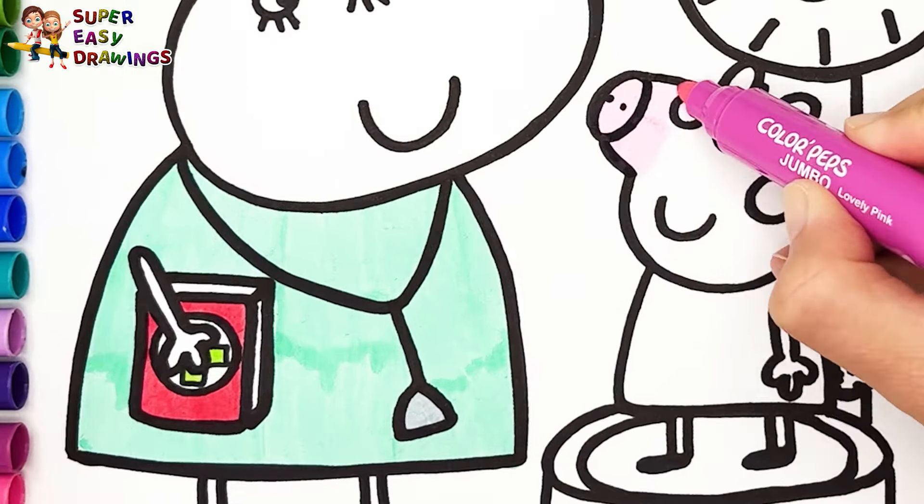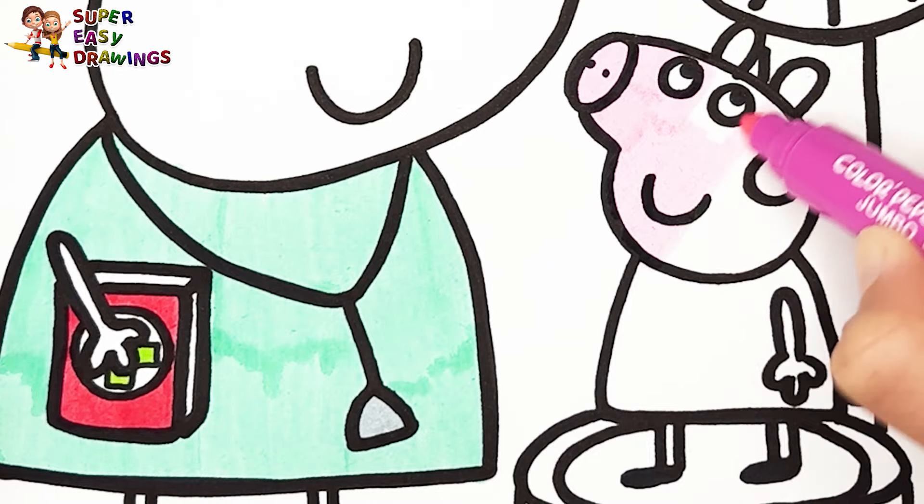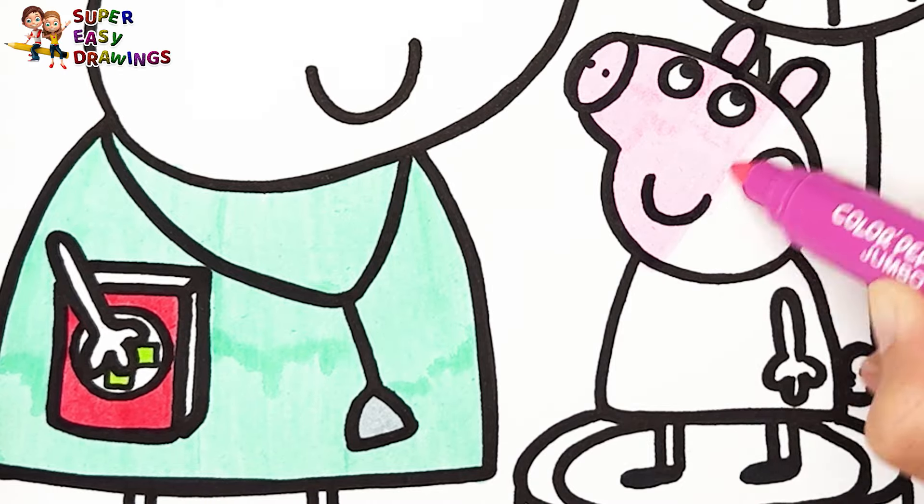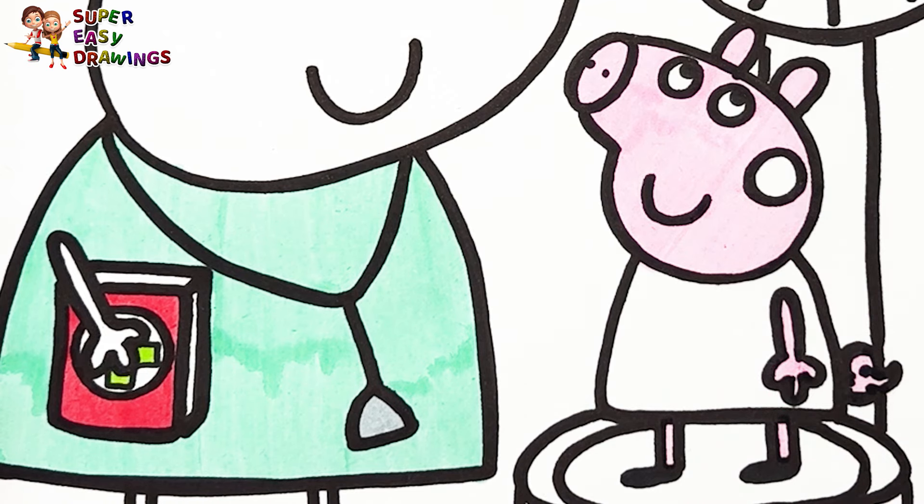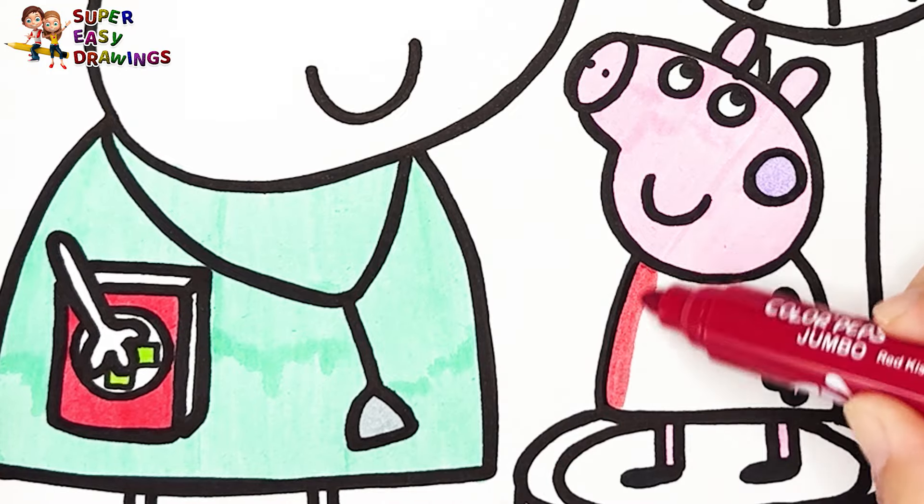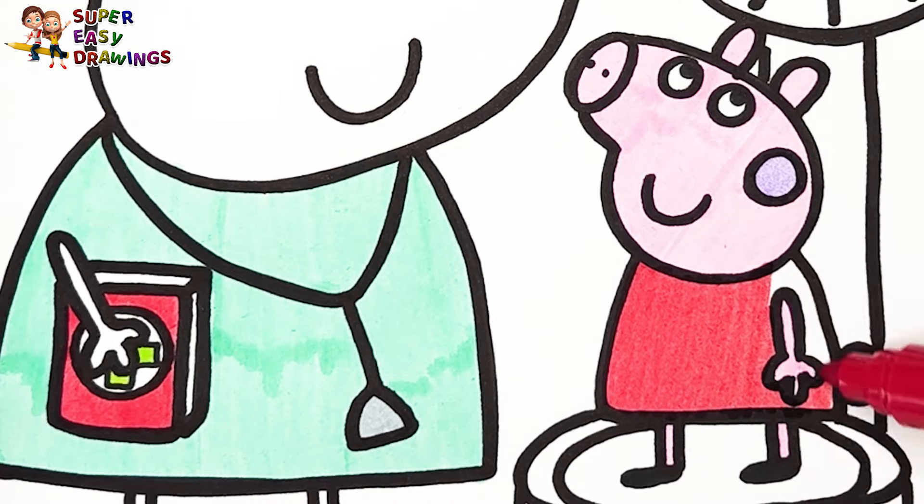Now let's color Peppa. For her skin, I'm going to use this pink marker. I use light purple for her cheek. I color her dress with red. Red is Peppa Pig's favorite color.